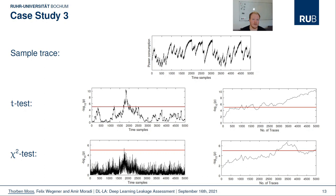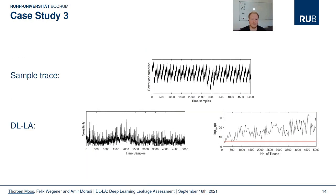The next case study is based on the same PRESENT implementation as before, but this time the clock of the circuit was randomized by an LFSR circuit, leading to a misalignment of the traces and a large amount of noise. We can see that the traditional methods require up to 5000 traces now to detect the leakage. Using DLLA for the same analysis, the detection succeeds with about 150 training traces. However, the acquired confidence is also reduced by a large margin and the identification of the points of interest might not be as sharp as for the T-test.